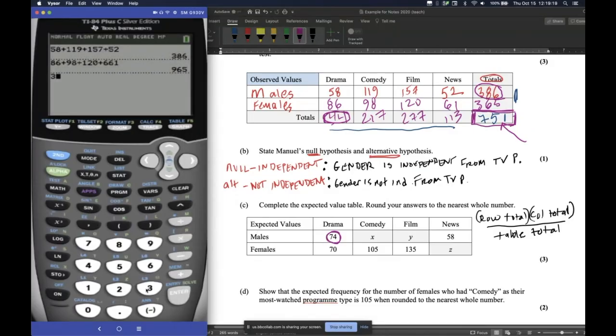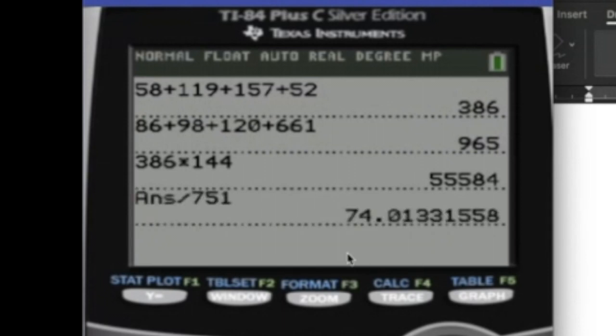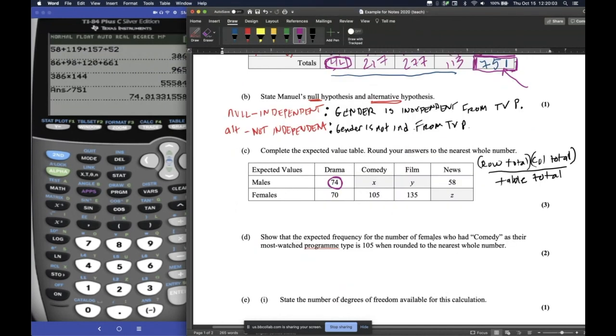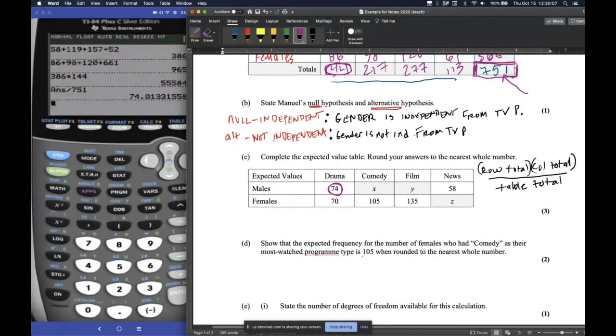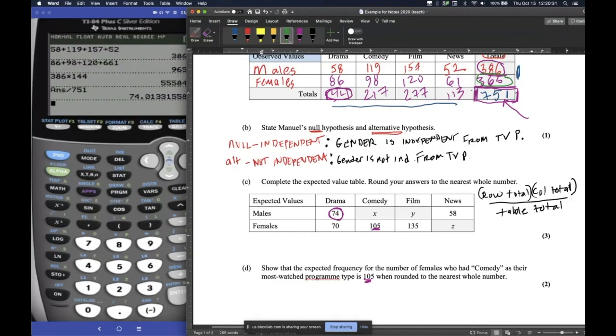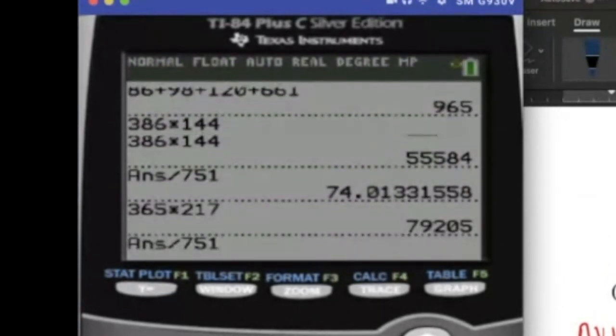We're going to try that. So 386 times 144 gives me that, divide by 751, and look at that. I get 74.0133 something, point nasty. Well, you always round to the nearest whole number for this. So that's how we got 74, because we're talking about people. So part D, they say, show that the expected frequency for the number of females who like comedy as their most watched program is 105. All we're doing is we're showing how they got this number right here. The row total is this, 365. And then the column total would be 217. I'll do 365 times 217, divided by everything, 751. And see, I get 105.